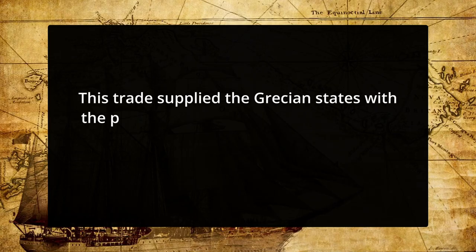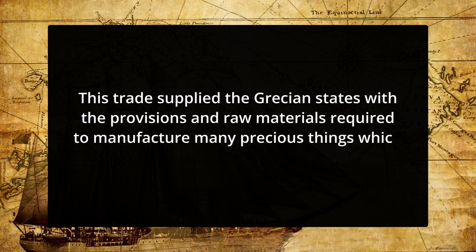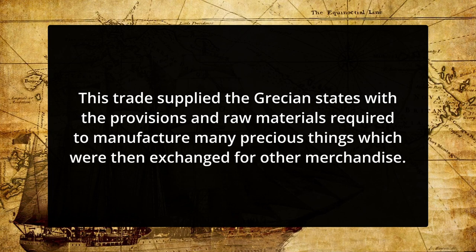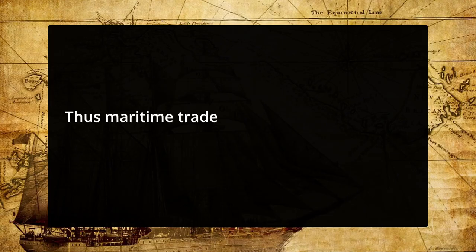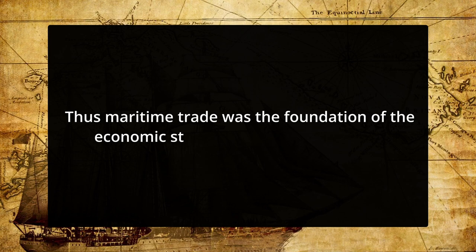This trade supplied the Grecian states with provisions and raw materials required to manufacture many precious things which were then exchanged for other merchandise. The Greek state's economic condition at that time depended on the import of large quantities of cereals and meat from foreign countries. The most important Grecian states had to provide for a host of people concentrated within the towns of Athens and had insufficient land to satisfy their needs. Thus, maritime trade was the foundation of the economic structure of the Greek states.